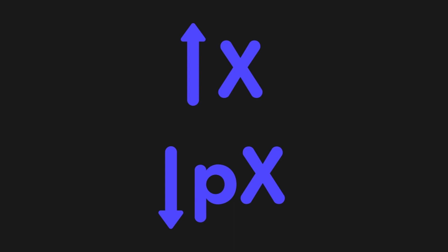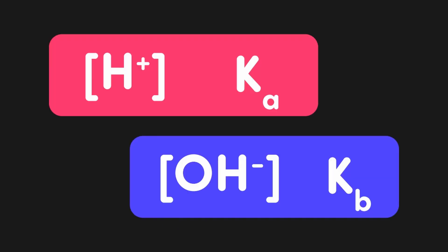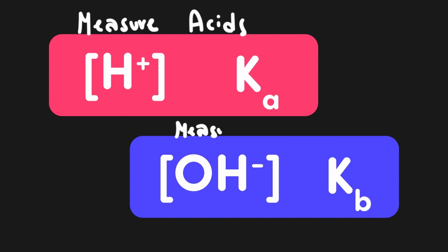This allows us to determine the relative strength of acids or bases based on comparisons made between either concentrations or equilibrium constants as well as p-values. To make these comparisons easier to interpret, we will correlate H+ concentration and Ka with one another, since they both measure acidity. Thus, both higher H+ concentration as well as higher Ka values indicate more acidic solutions. We can do the exact same thing for hydroxide concentration and Kb, keeping in mind that these values measure bases instead of acids.